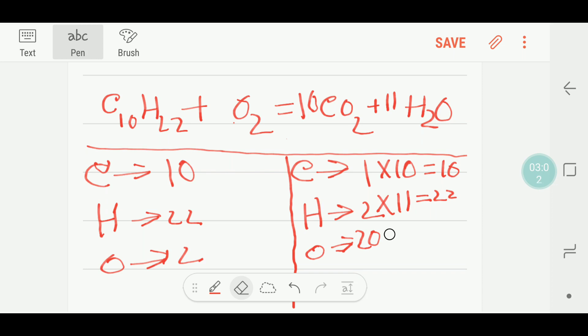I have to update my oxygen, so 11 oxygen means I am getting 31. So here, carbon is balanced, hydrogen is balanced, but my oxygen is not balanced.